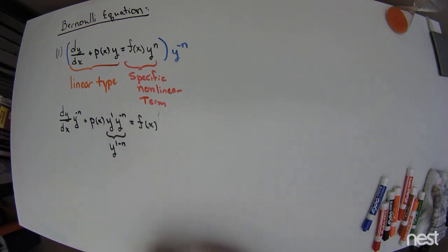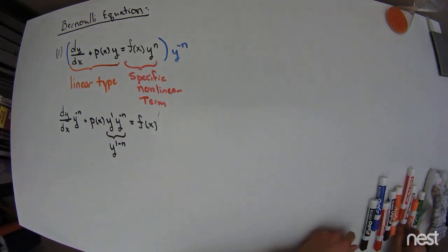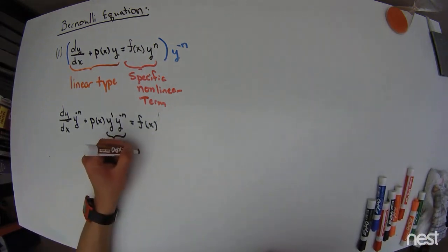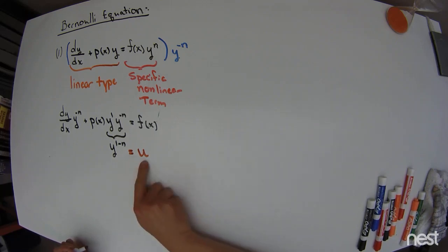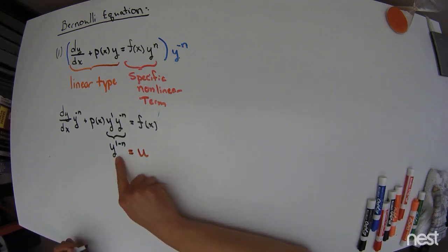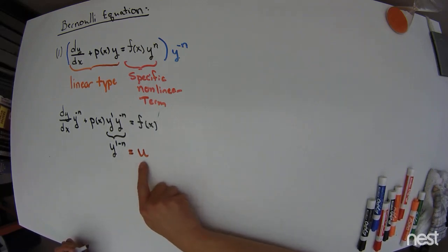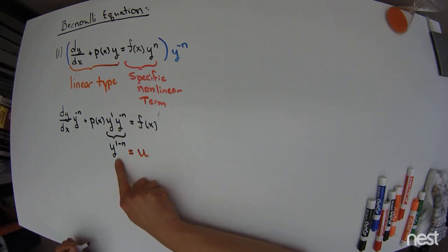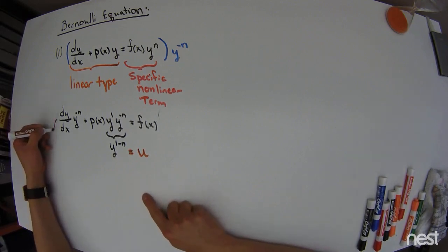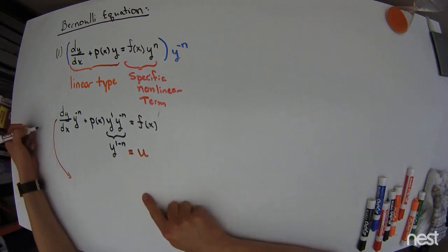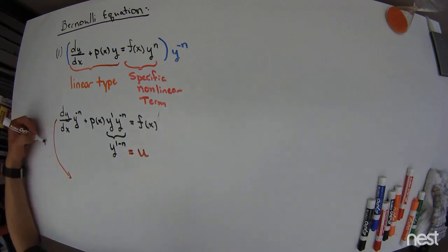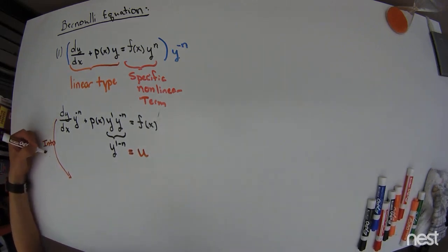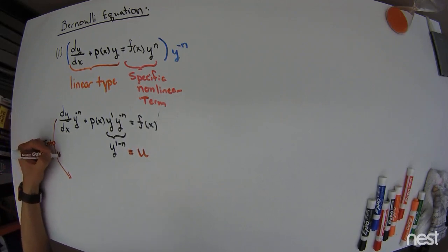We're going to play the typical game in mathematics and say: I don't like the way that looks, so I'm going to cover it up. So this is u. This u variable is now y to the 1 minus n. U is a function of x because y is a function of x, and we use that to cover it up. Basically what we want to do is transform the whole equation into the u variable.